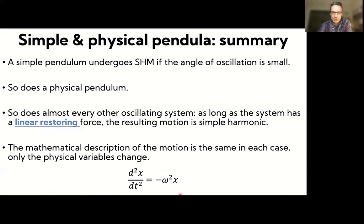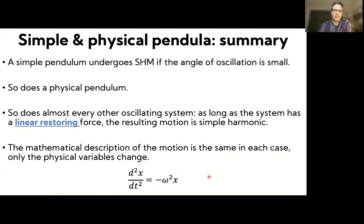This is the general form of the equation of motion: the second derivative of position with respect to time equals minus ω² times x. That combination of constants gives our angular frequency. If that is the functional form of your equation of motion, you will always end up with simple harmonic motion.